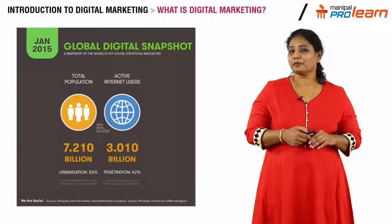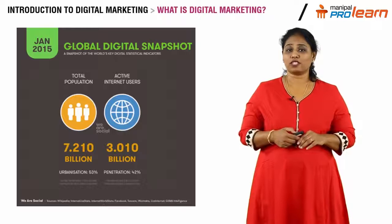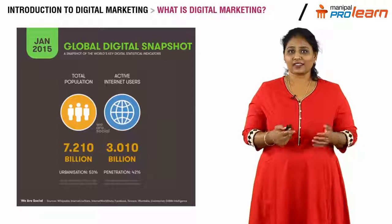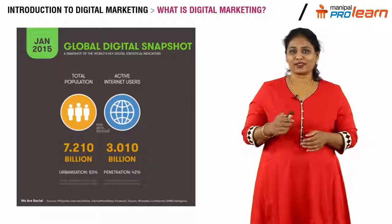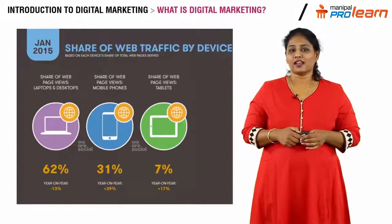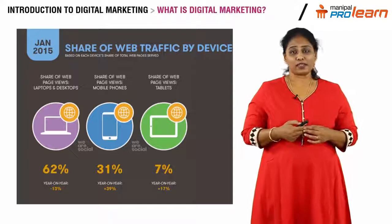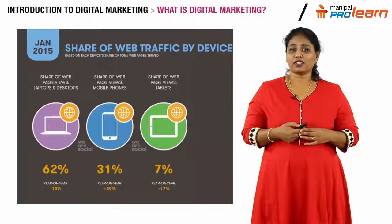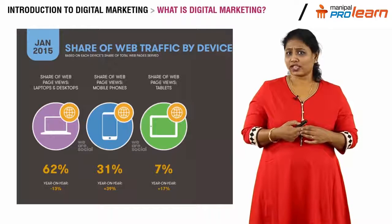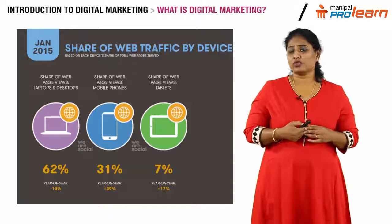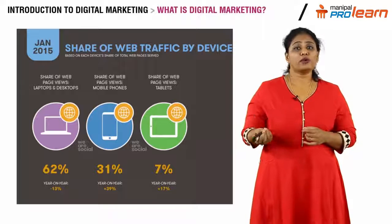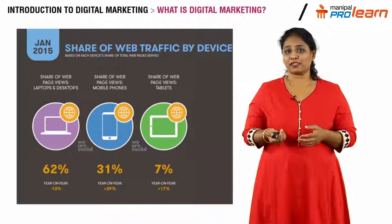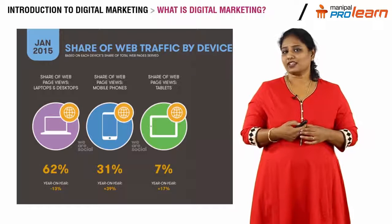There are 3 billion people who are online today, which is close to 40% of the world's population. Who are these people, what are they doing, and how are they doing it? 62% of these people are browsing the internet through their computers or desktops. 31%, which is again a huge number, are doing so through mobile devices — the smartphone revolution has made this possible.